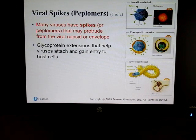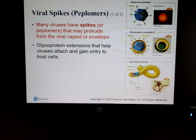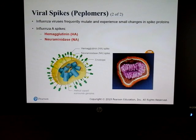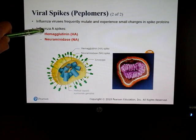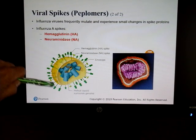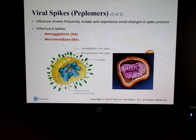Even Ebola has some types of spikes on the outside. Researchers are currently looking at COVID's spike proteins and whether we can make a vaccine based on knowledge of those spikes. Influenza viruses have what are called HA and NA spikes, and here's a good example of that.